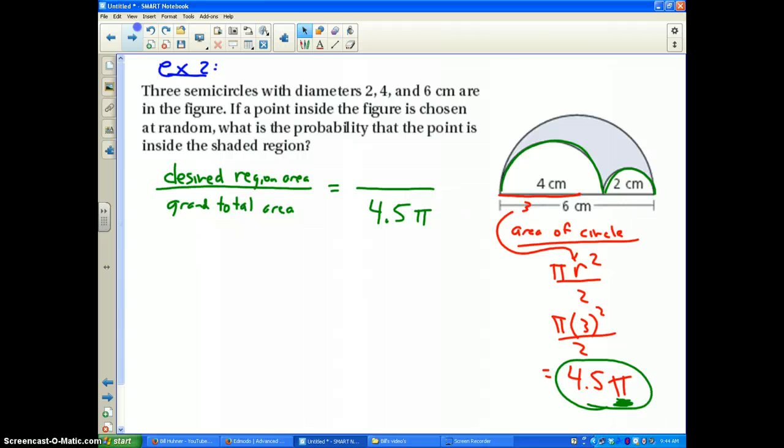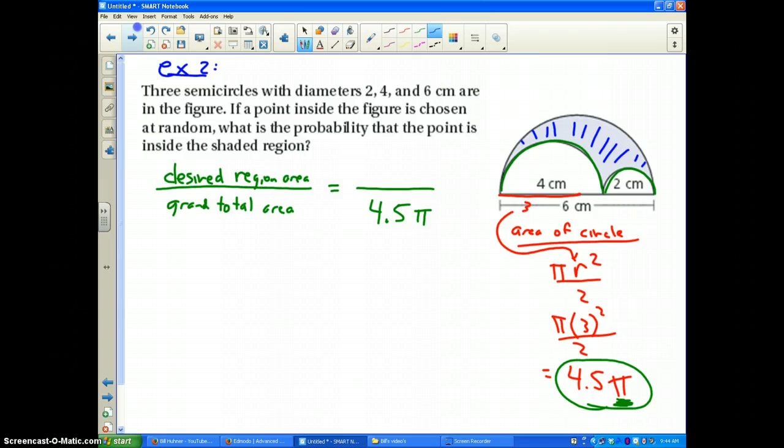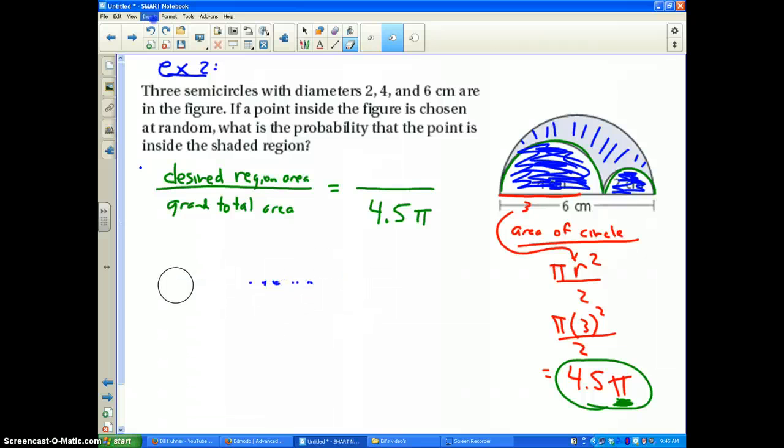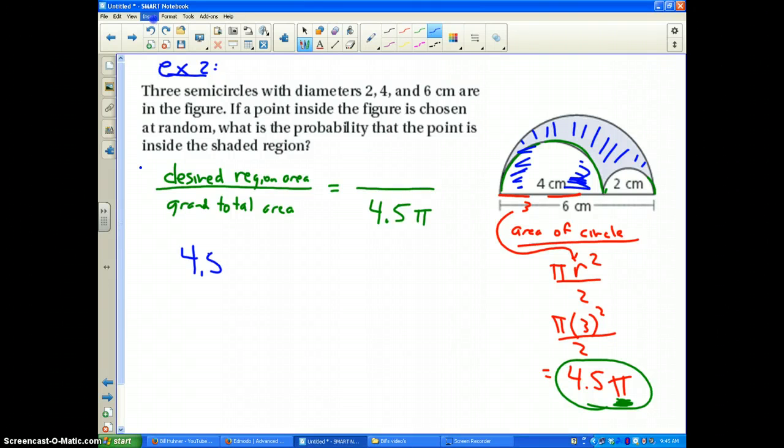Well, let's take a look at the top. The top, we need to figure out the shaded region. Well, the only way to do that is to take the area of the large semicircle and then minus off the area of the two smaller circles. Because these pieces right here are chopped out of there. The only way that you can find those areas is by minusing them off.